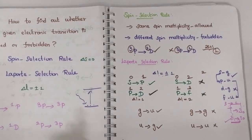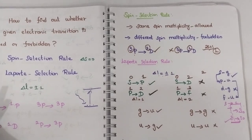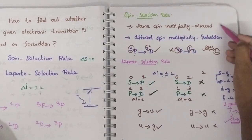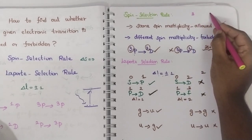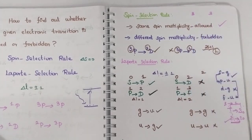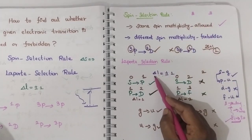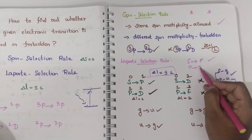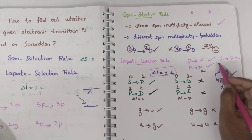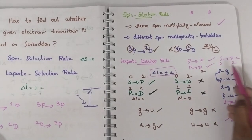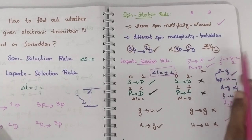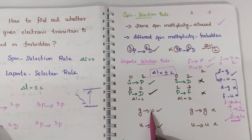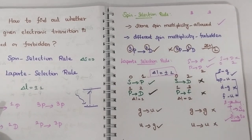Let us solve some questions. There are only three rules: spin selection rule, Laporte selection rule, and parity selection rule. For spin selection: same spin multiplicity is an allowed transition. For Laporte: ΔL should be plus or minus 1, so S to P is allowed, P to D is allowed, but S to D is forbidden because the difference is 2. For parity: gerade to ungerade is allowed; same parity is forbidden.